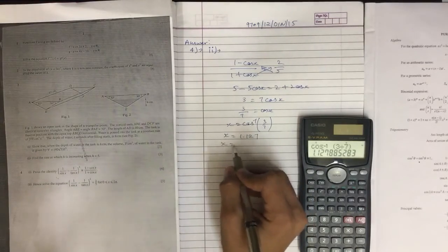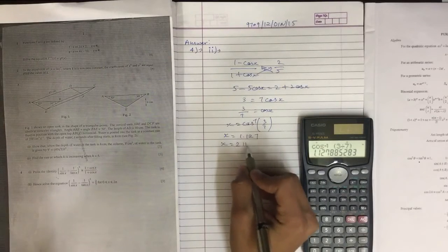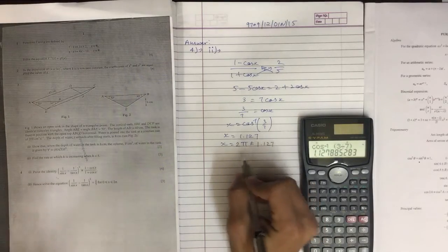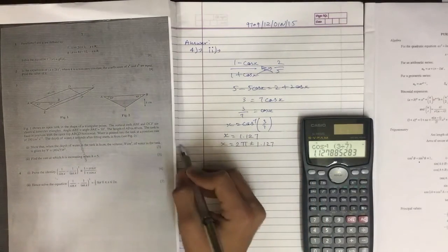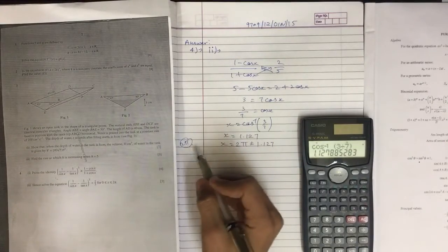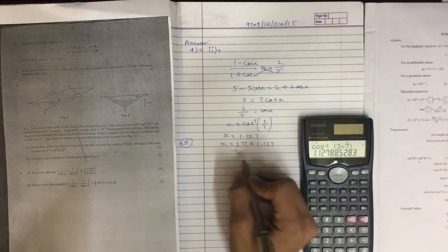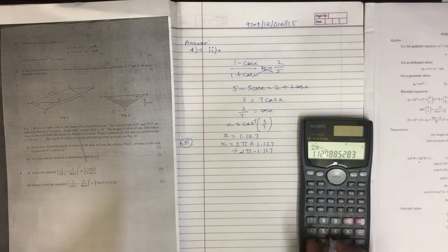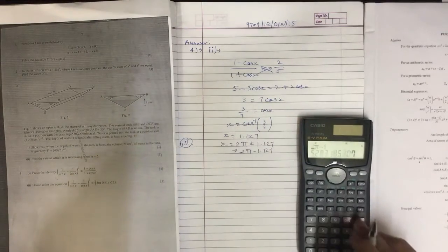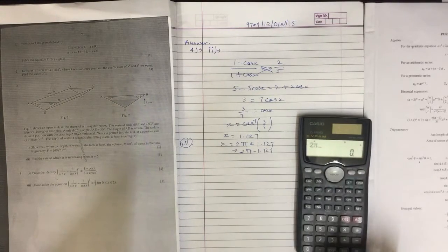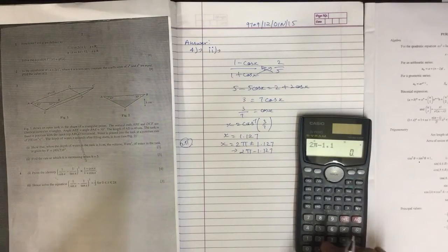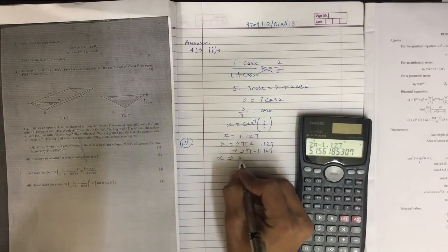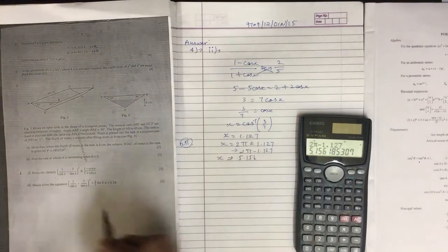Now for the second value, we are going to subtract. If we add this to 2 pi it will exceed the 2 pi range. So we subtract: 2 pi minus 1.127. Putting this in the calculator we get x equals 5.156, and this is how we solved it.